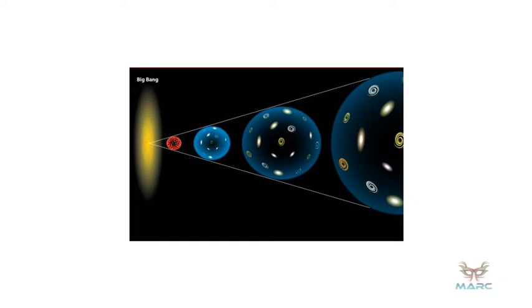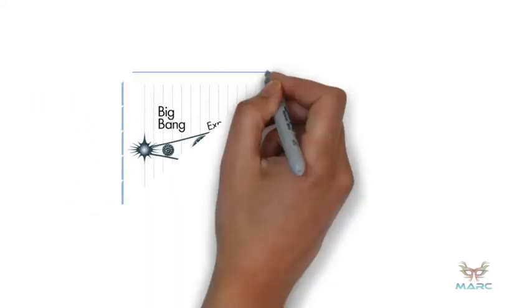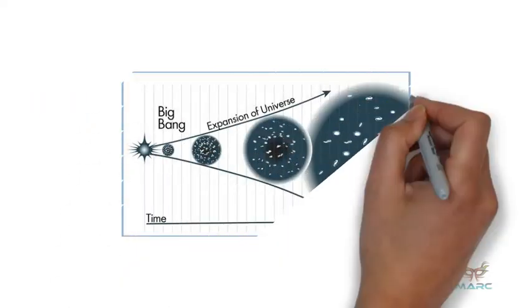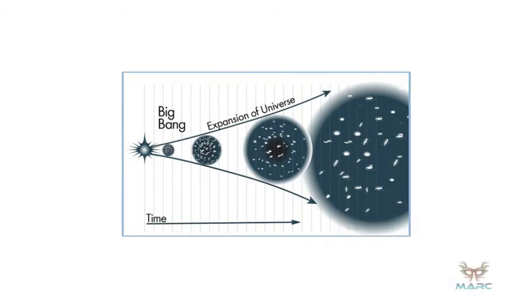Before the Big Bang, there was no time. All matters available in the current universe were like a tiny, atom-sized point. It was called singularity.